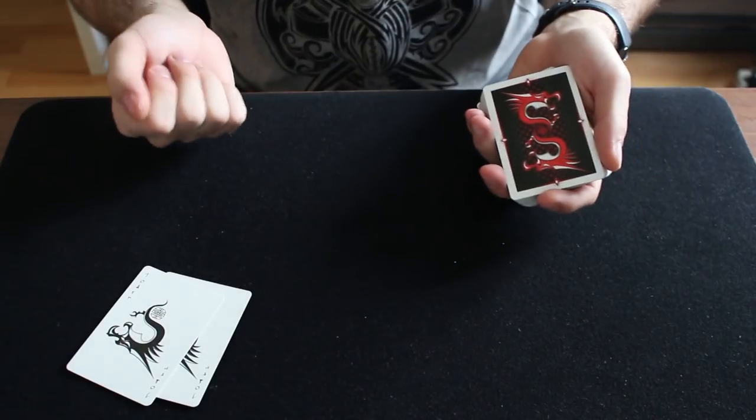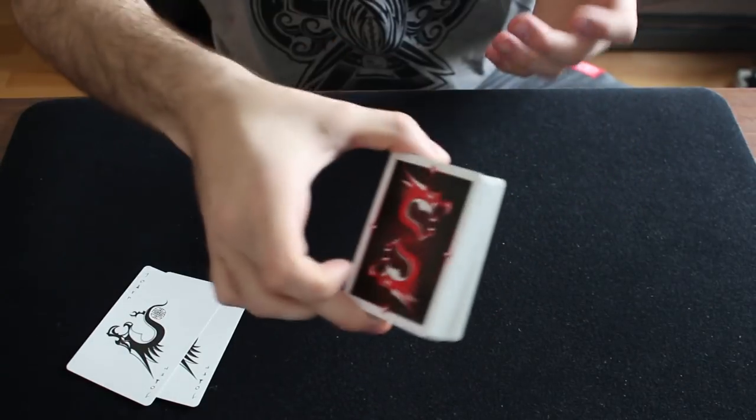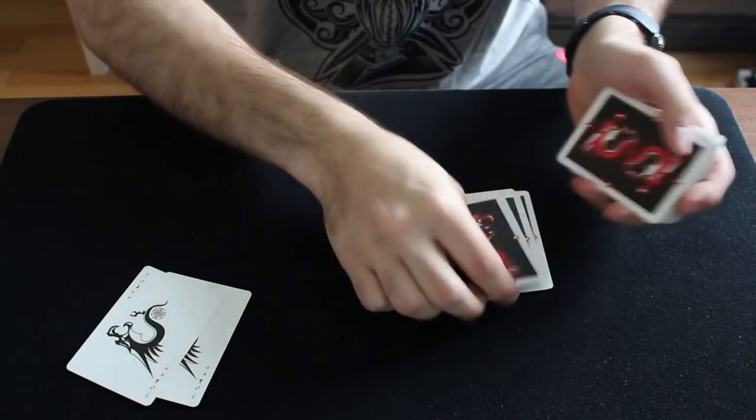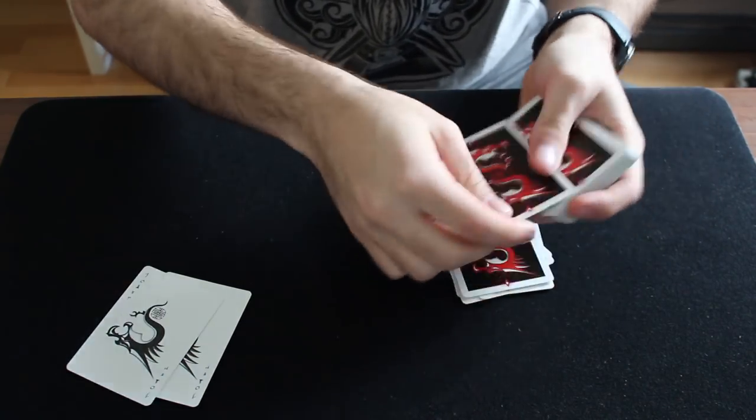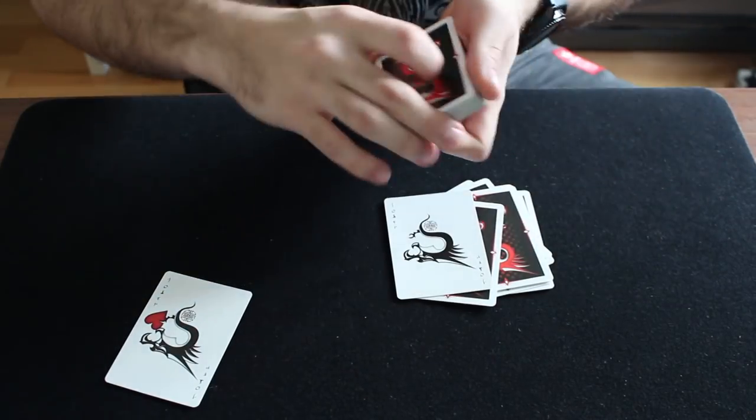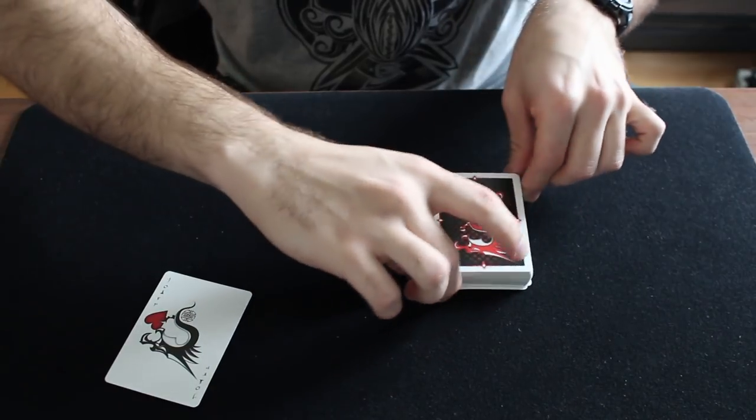Any number will do, just pretend the spectator names the number 9. Take the cards yourself and deal now 9 cards on the table: 1, 2, 3, 4, 5, 6, 7, 8, and 9. Mark the spot with one of the facing up jokers and place the remaining cards back on top.